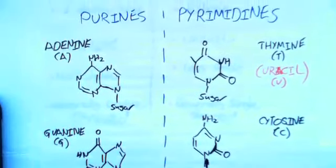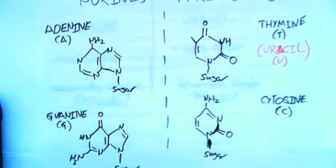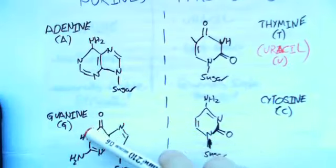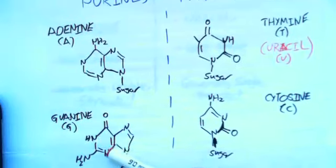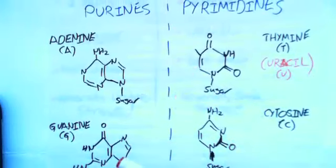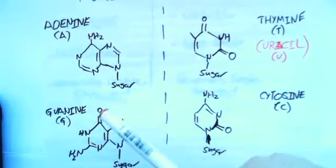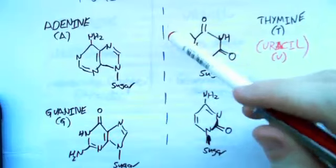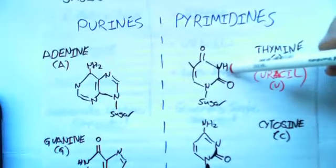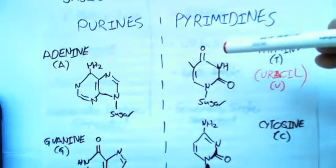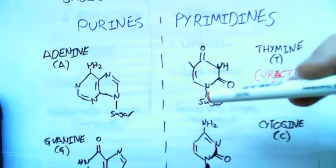We have two distinct types: purines and pyrimidines. Purines have these two heterocyclic rings, these two hexagonal rings. Heterocyclic just means it's a cyclic ring, a closed loop, and hetero means there's heteroatoms, so nitrogen is included. Purines are composed of two heterocyclic rings and they're attached to the sugar. Then we have pyrimidines, which are just a single cyclic ring.